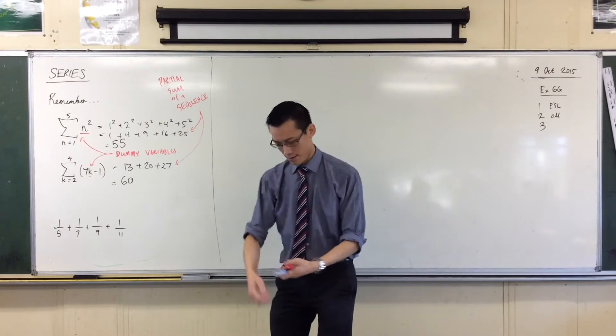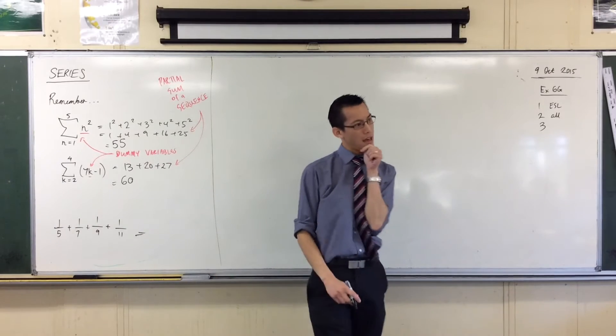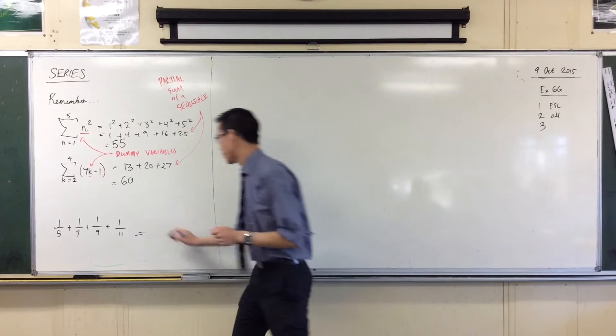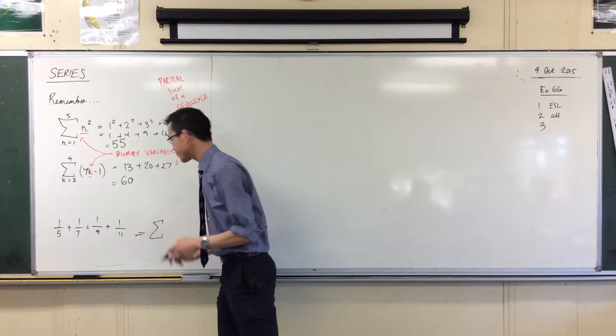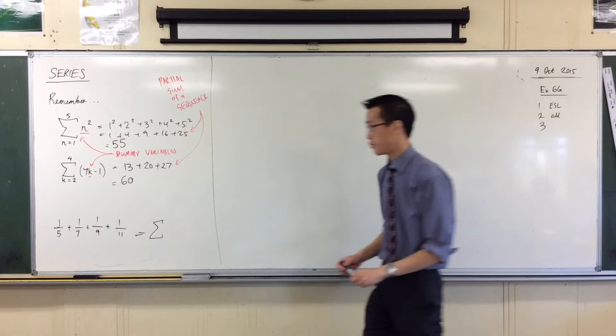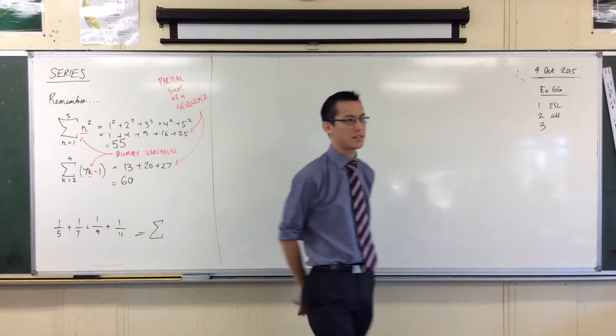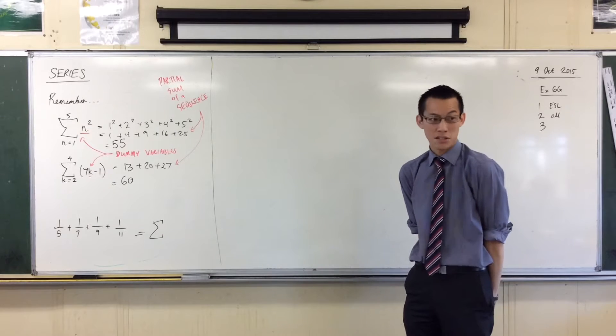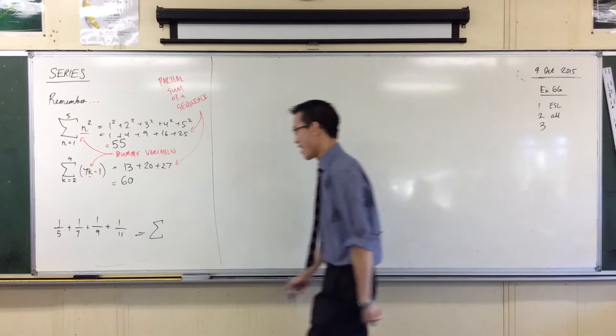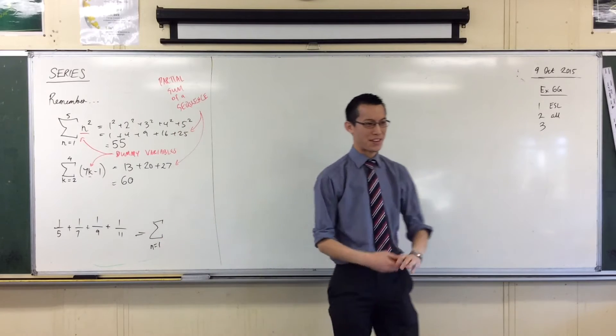So if I wanted to rewrite this as sigma notation, okay? How could I do this, right? Well, first, I'll just write my sigma. Okay? Now, remember, I need a starting point. Don't I? I need a starting point. I can start anywhere I like. So, what would you like to suggest as a nice common place to start? How about N equals 1?